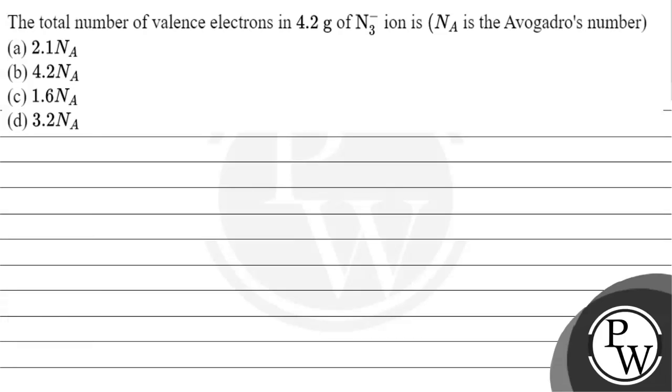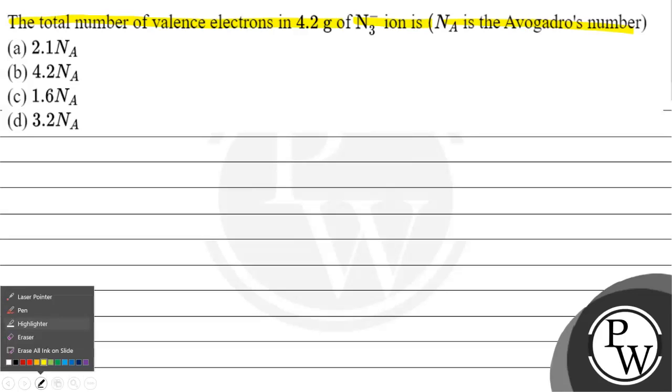Hello Bacho, let's read this question. The question says the total number of valence electrons in 4.2 gram of azide ion is Avogadro's number. Option A: 2.1 × NA, Option B: 4.2 × NA, Option C: 1.6 × NA, Option D: 3.2 × NA.